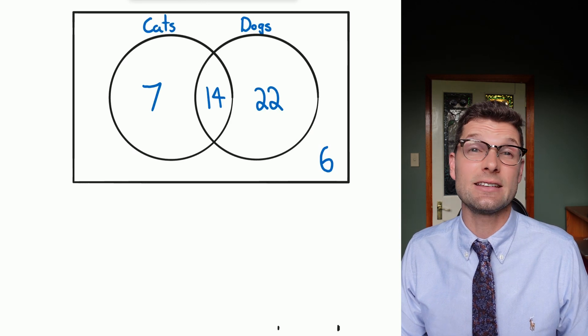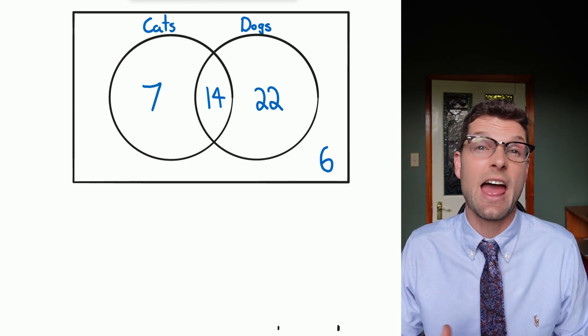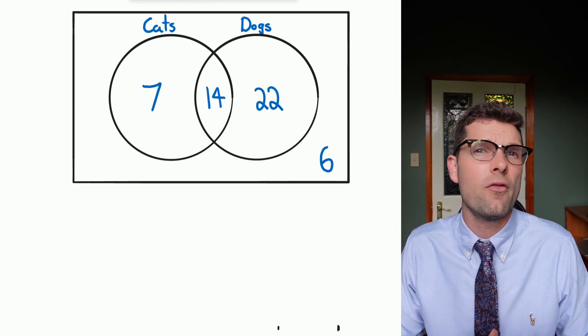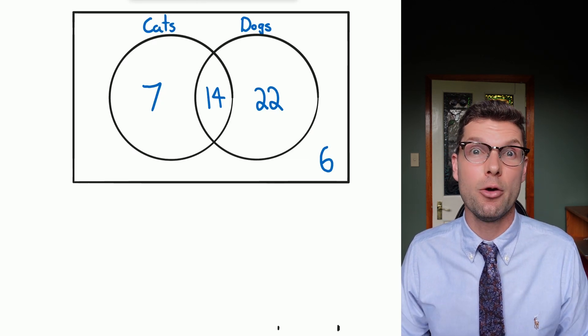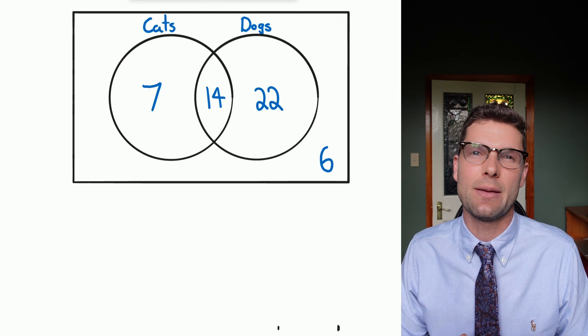So in this example here we are seeing how many people have cats and how many people have dogs. Obviously the bit in the middle is the important bit where we've got people that are in both, and outside of the people that have neither.